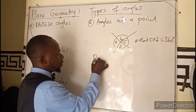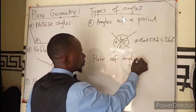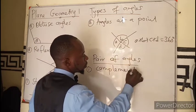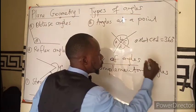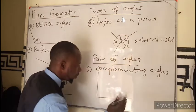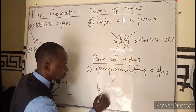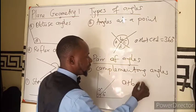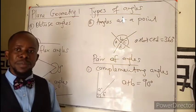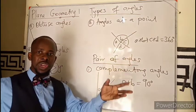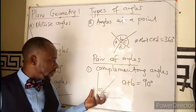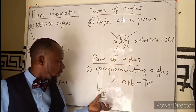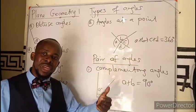Now we have what we call pairs of angles. We have complementary angles. These are two paired angles where if I add angle A plus B, I should get 90 degrees. Any pair of angles — whether two, three, or four — that are in a right angle: if you add them, you are supposed to get 90 degrees. So the adjacent angles in the right angle, when you add them, also give 90 — they are called complementary angles.